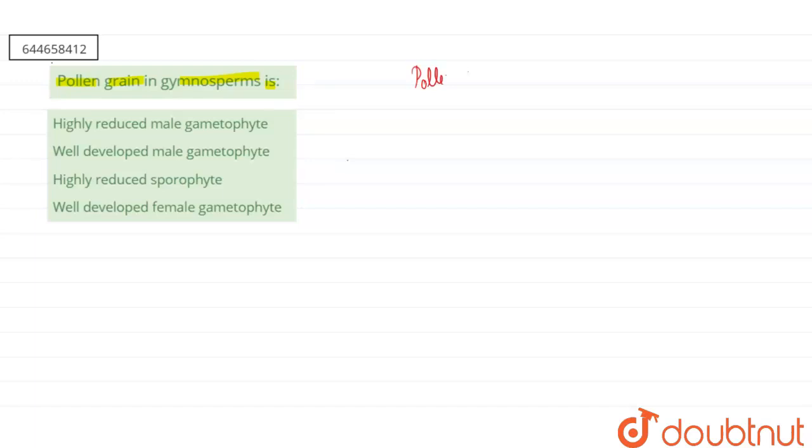That is we are talking about cycads, pinus, etc. So here this pollen grain in these plants will be highly reduced, or we can say a small male gametophyte.